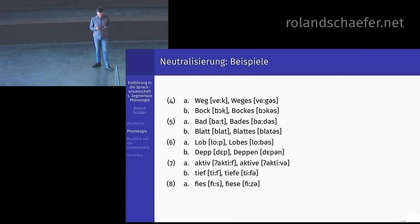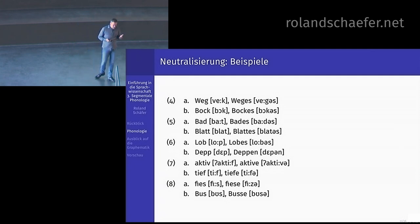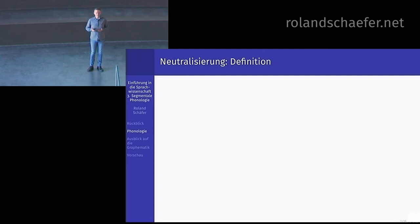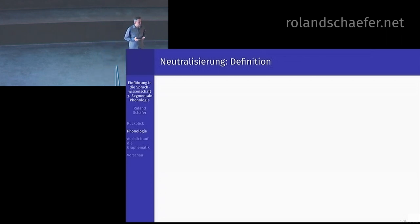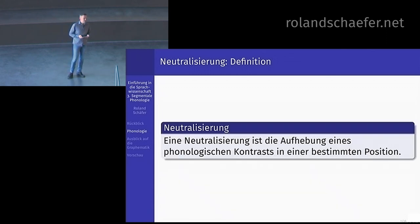Fies/Fiese und Bus/Busse ist dasselbe noch mal für stimmhaftes und stimmloses S. Das sind alles Neutralisierungen — hier genau illustriert durch die sogenannte Auslautverhärtung oder Endranddesonorisierung. Wenn Sie das kontrollieren können, können Sie Fremdsprachen wesentlich akzentfreier sprechen, denn in vielen Sprachen ist das nicht so. Im Englischen erkennt man deutsche Erstsprecherinnen daran, dass sie das nicht richtig machen — da dürfen Sie die Endranddesonorisierung nicht anwenden. Eine Neutralisierung ist die Aufhebung eines phonologischen Kontrastes in einer bestimmten Position.